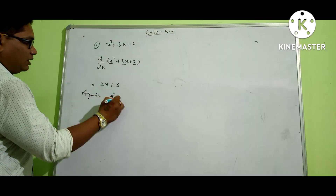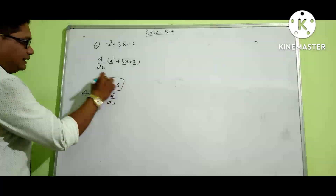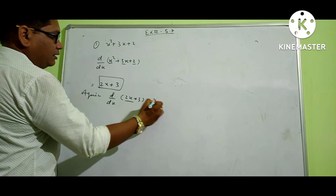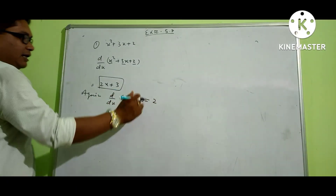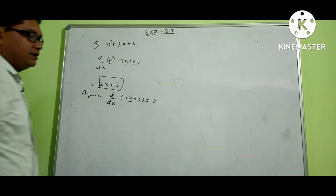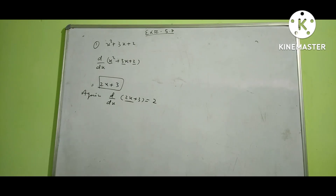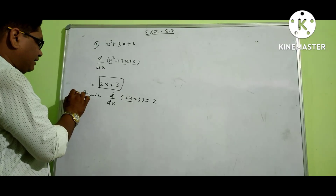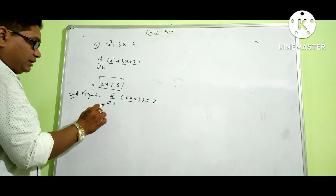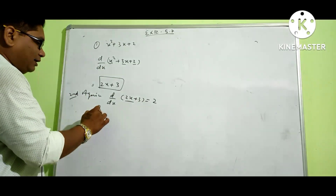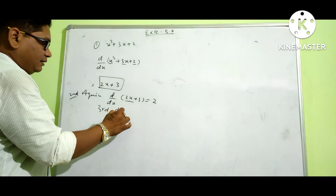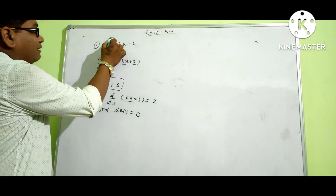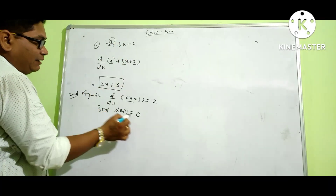The second derivative is the derivative of the first derivative. Differentiating 2x plus 3 gives us 2. So if you look at x to the power of 2, the third derivative would be 0. Now the next question, number 2, is x to the power of 20.